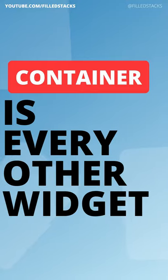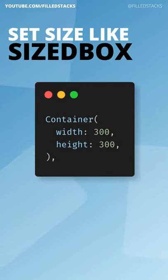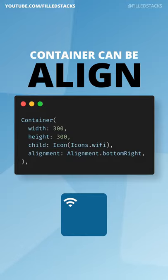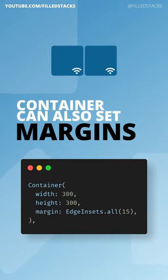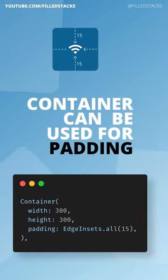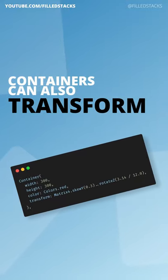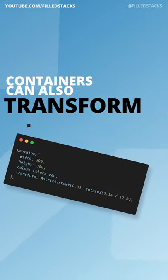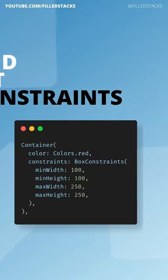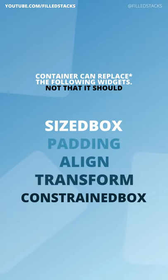But that's not all. Container is basically all the other widgets combined. You can give it a width and a height like a SizedBox, you can set the alignment of your children like the Alignment widget, containers can use margins for outside spacing, containers can be used for padding like a Padding widget, containers can even do their own transforming, and you can also set your min and max dimensions using the constraints. Containers can replace every widget.